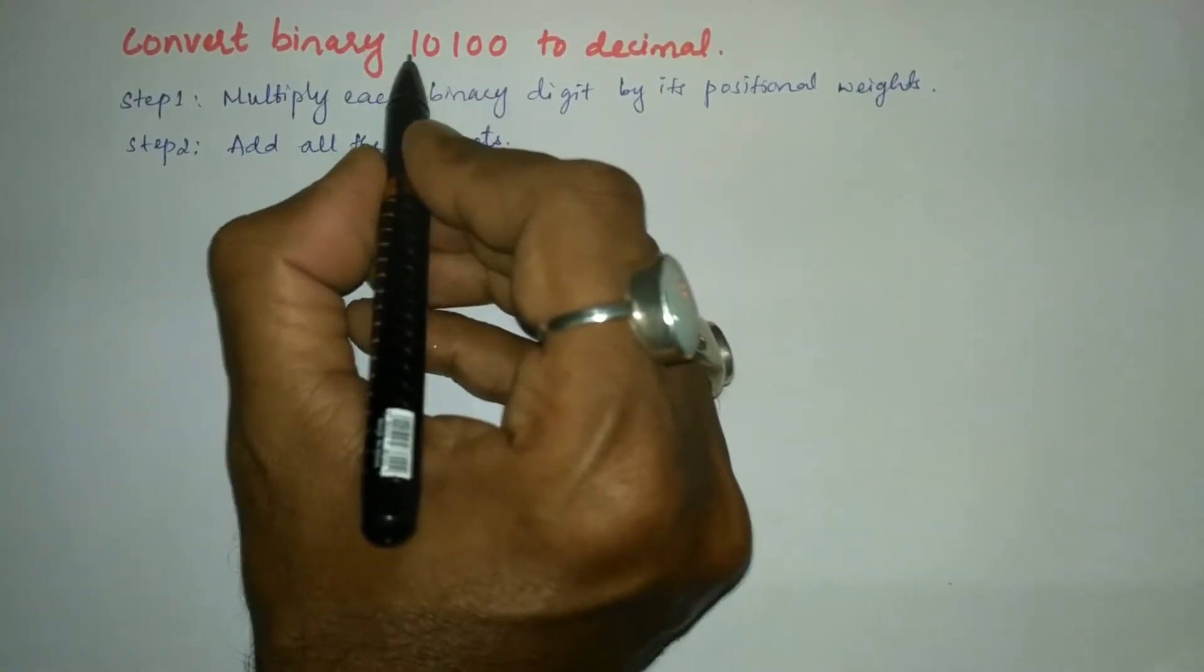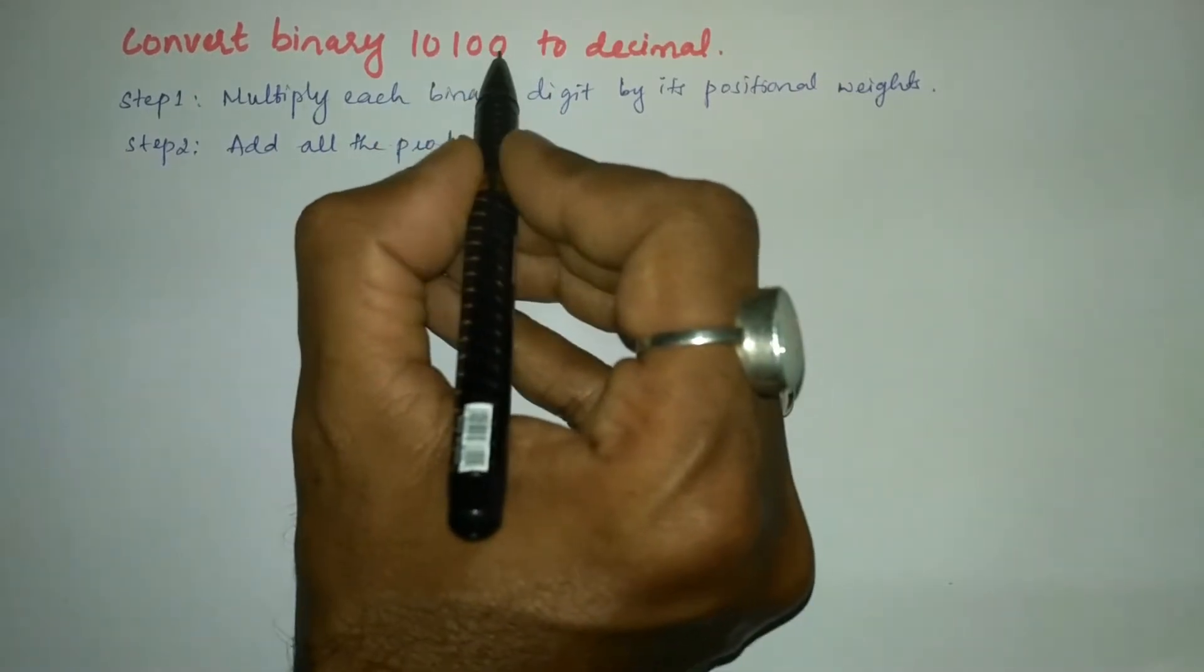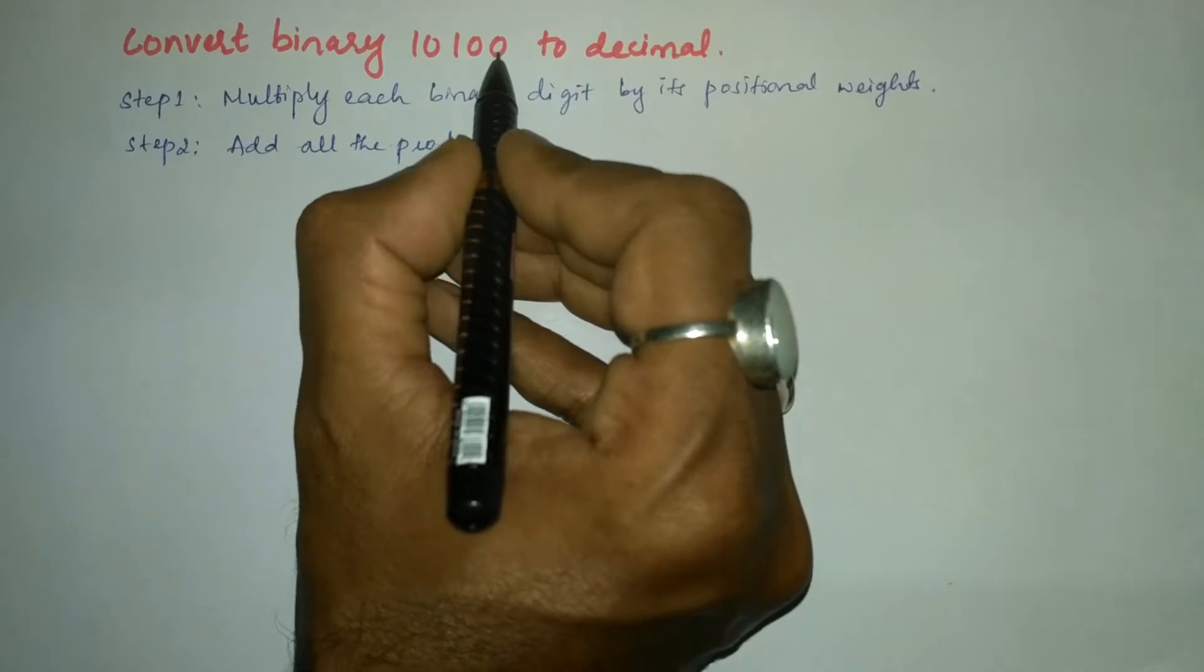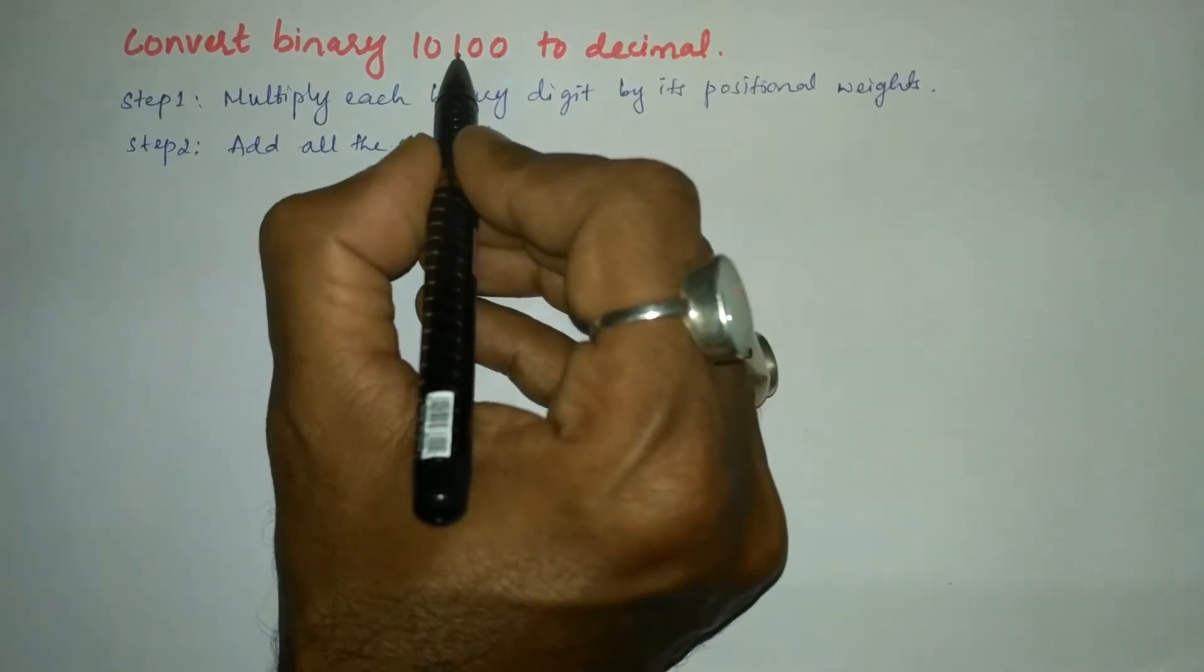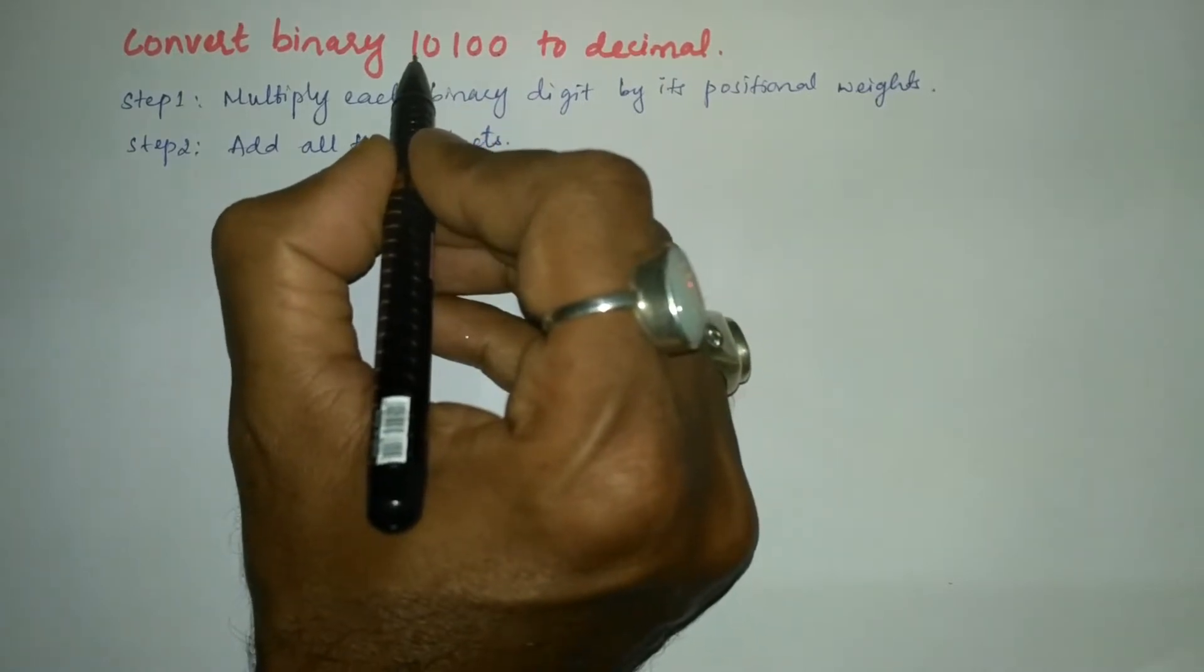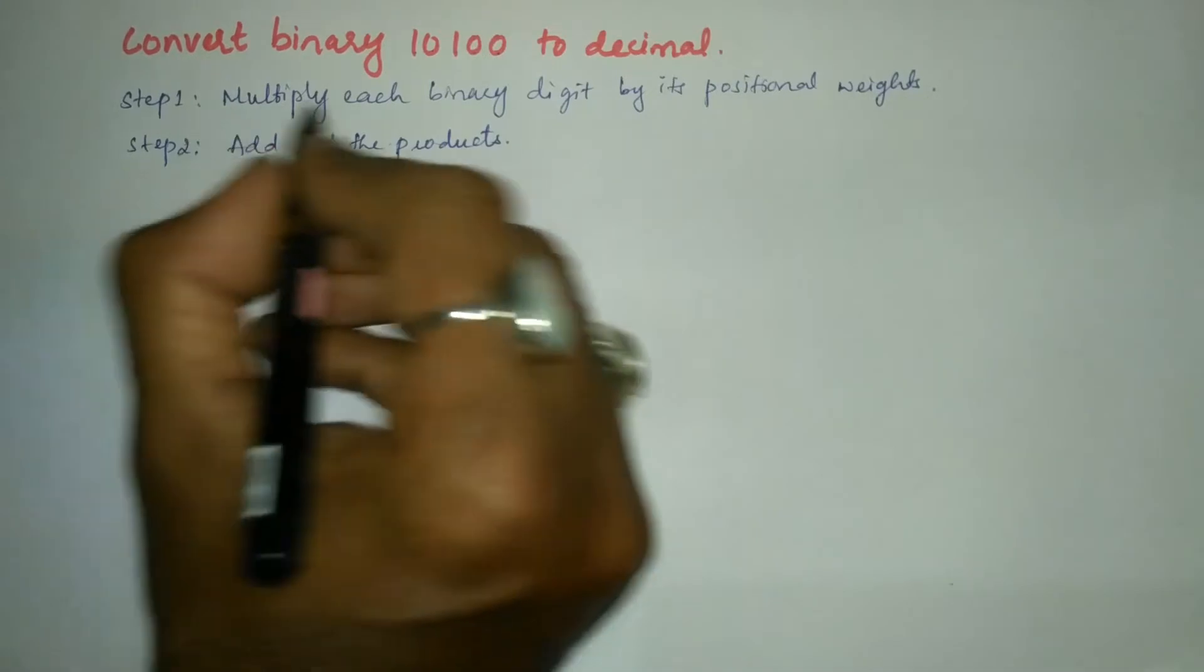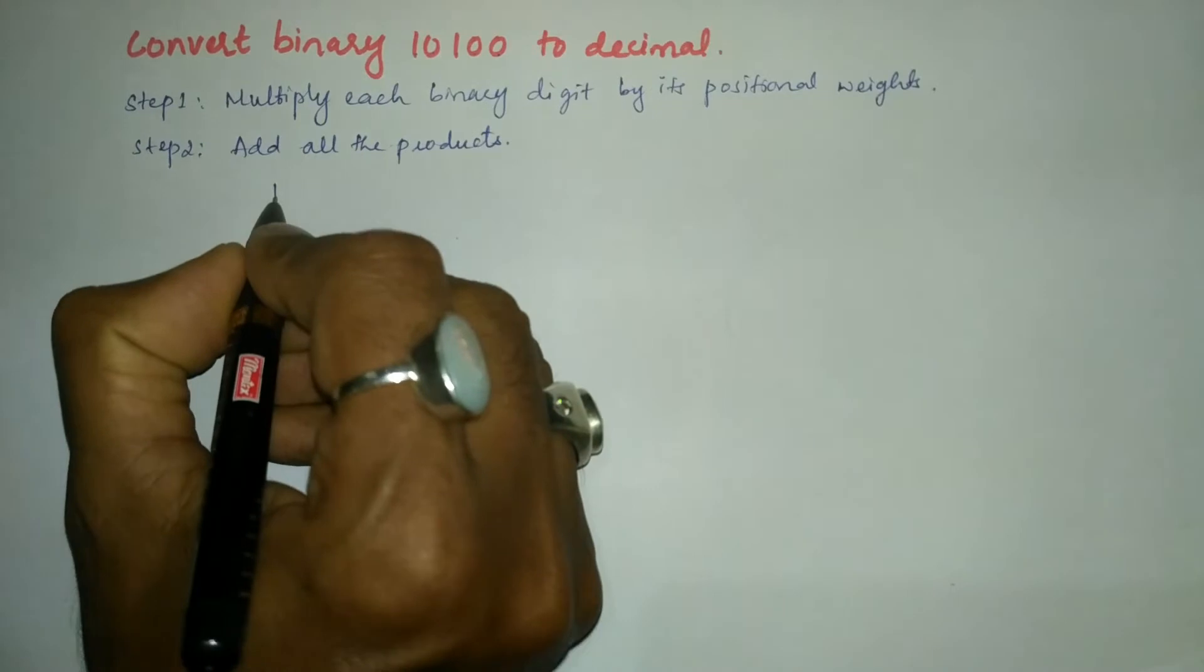Now consider the given binary number consisting of five digits. Start counting from the right-hand side. The position of this 0 is 0, 1, 2, 3, 4. So the positional weight of this one is 4. First step is we have to multiply each binary digit by its positional weight.